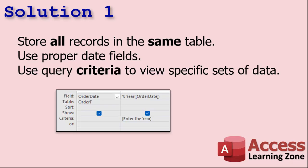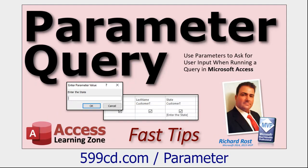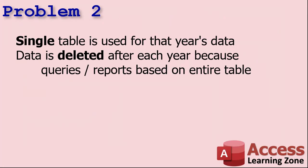To fix that, you store all the records in the same table. All your orders should be in one orders or sales table — use proper date fields. I know people want to bring up all the sales from 2020 by just opening that table, but what you're going to do is make a query and use proper criteria to view whatever year you want. You bring your order date in, set a calculated field with the Year() function — that returns a number like 2020 or 2021. You can put that number in the criteria or use a parameter query. That way you've got 20-plus years of sales in one table and you just run the query for whatever year you need — 2018, 1994, whatever.